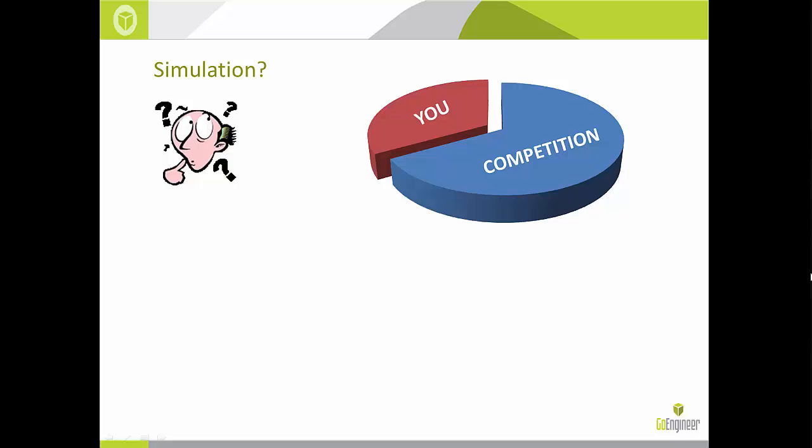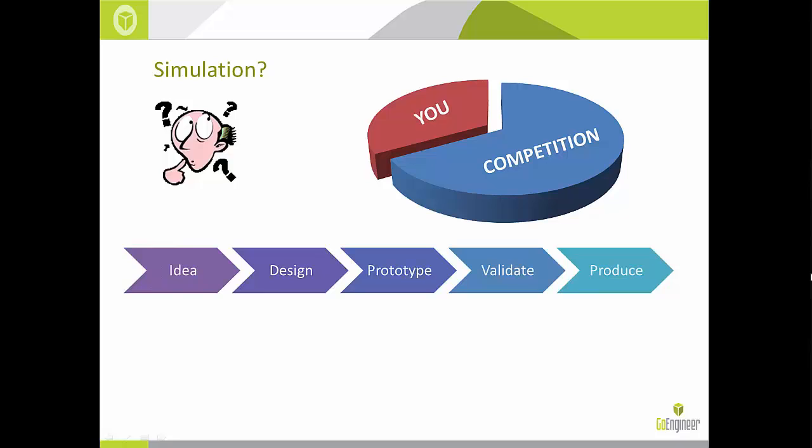Traditionally, developing new products or improving existing ones is a five-step process. It begins with an idea — a napkin sketch — which is refined into a CAD model. This design is reviewed and then prototyped for testing. The real bottleneck is prototyping: the prototype must be manufactured and subjected to physical tests mimicking real-world conditions until validated for strength, durability, and other performance metrics. If it fails, it's back to the drawing board for fresh designs, reviews, and more prototypes — time-consuming and costly.